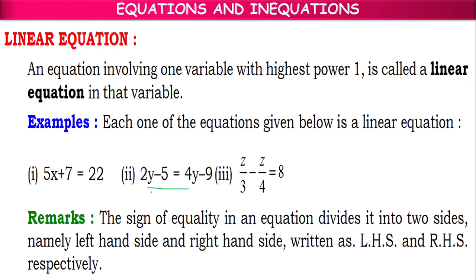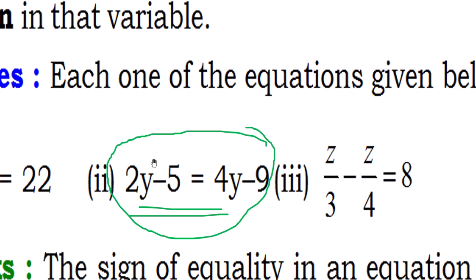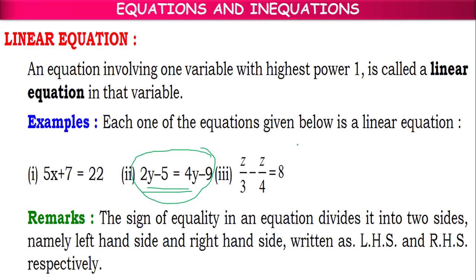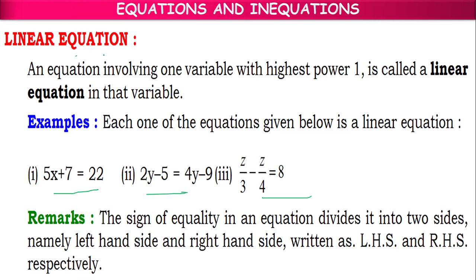In the same way, 2y minus 5 equal to 4y minus 9 — in this also we have only one variable y whose highest power is 1, so it is a linear equation. Similarly, z by 3 minus z by 4 equals to 8 — in this also we have one variable z whose power is 1, so highest power is 1. These three are examples of linear equations because they are defined in one variable and all variables have highest power 1.